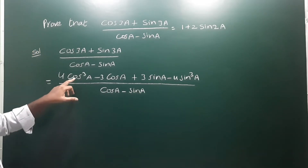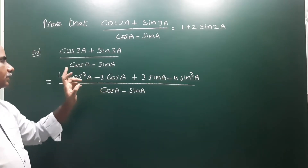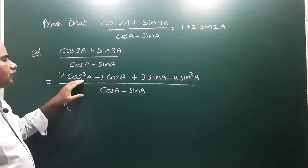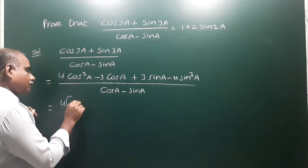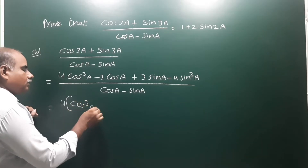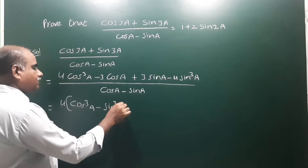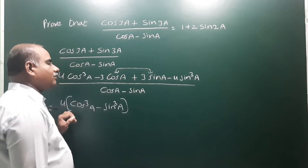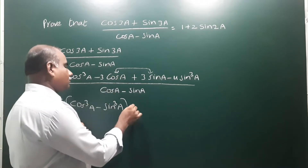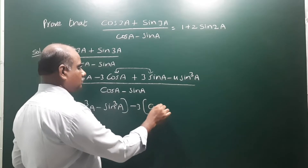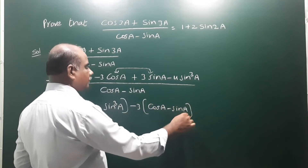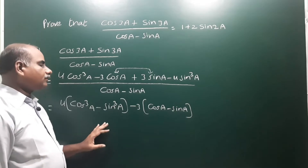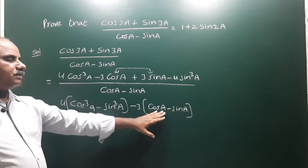Now take 4 as common from 4cos³a and 4sin³a. When 4 is taken as common from those terms it becomes 4(cos³a - sin³a). Then take -3 as common from the remaining two terms. When -3 is taken as common we get -3(cosa - sina), which is the same as the denominator.